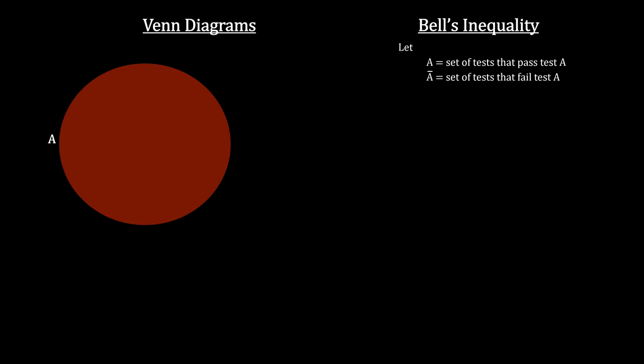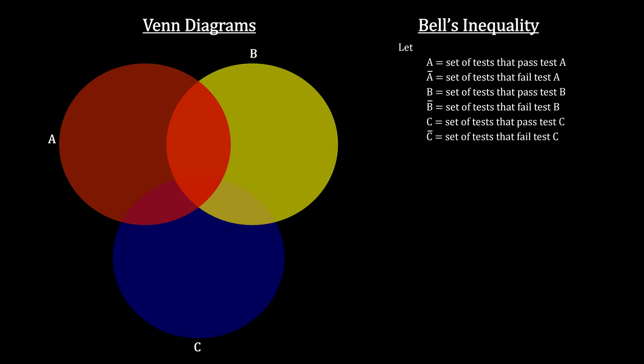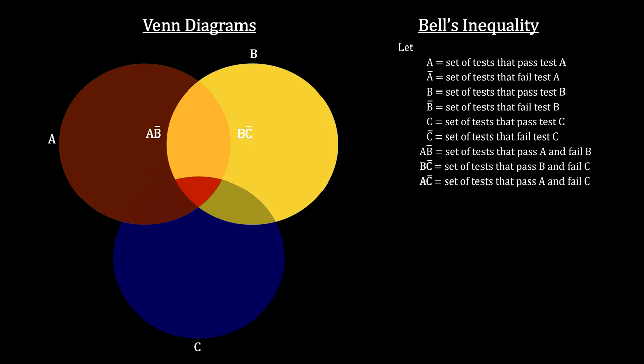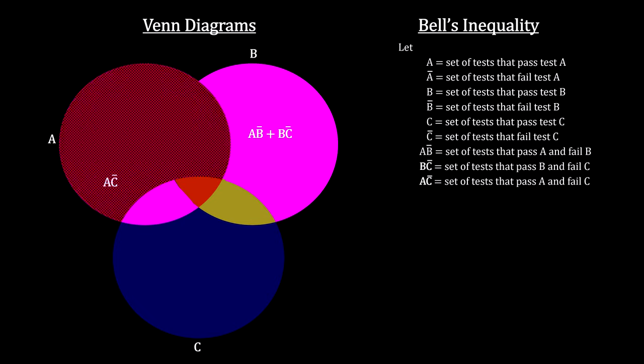Now consider the three sets. Set A of all the tests that passed test A, set B of all the tests that passed test B, and set C of all the tests that passed test C. Notice where they overlap and where they don't. Here's the subset A-not-B. And B-not-C. When we combine them, you can see that A-not-C is a subset.